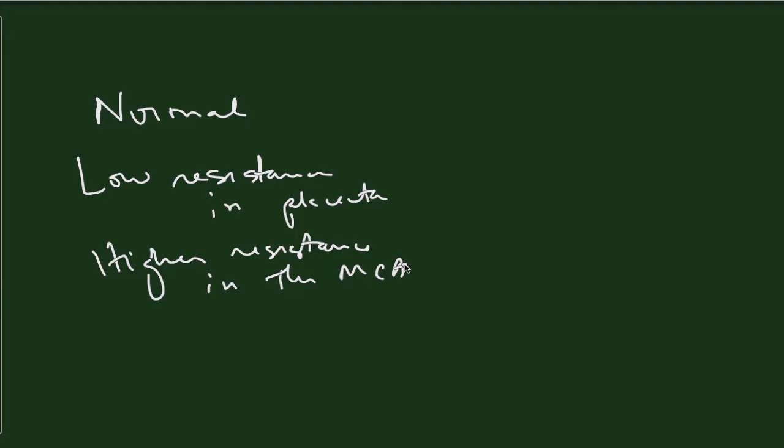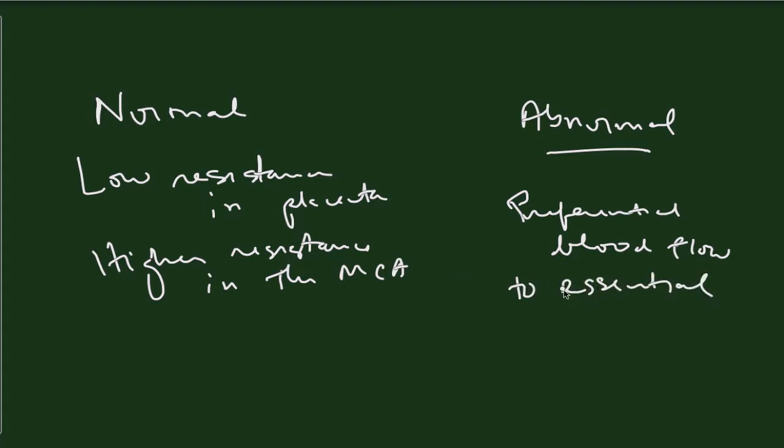Under normal circumstances, there is no preferential blood flow to essential organs. Under abnormal conditions, on the other hand, where blood flow to the placenta is reduced during diastole, there is preferential blood flow to those organs that are essential, particularly the brain and the heart.